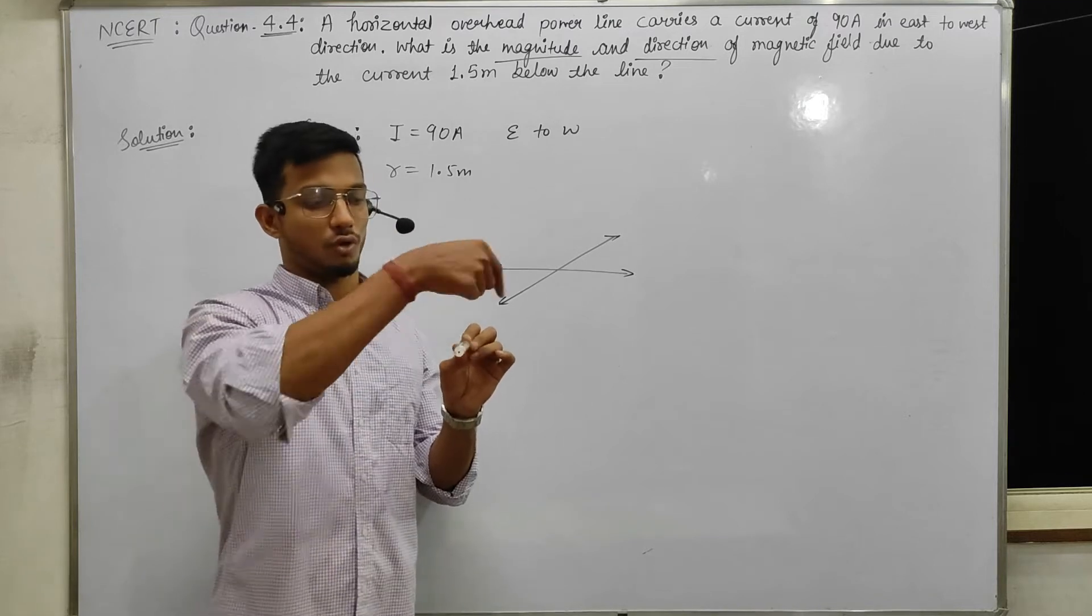We have 4 fingers in the current direction. Current is east to west. The point is below, so palm is towards the lower point. Keep 4 fingers in the current direction, palm towards the point. Now cross it like this with the thumb. The thumb gives the direction of magnetic field. So the magnetic field is towards south.